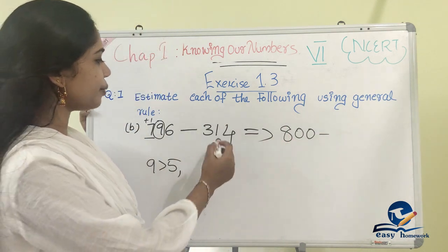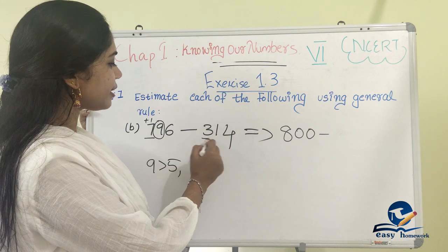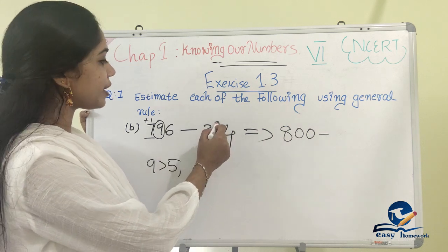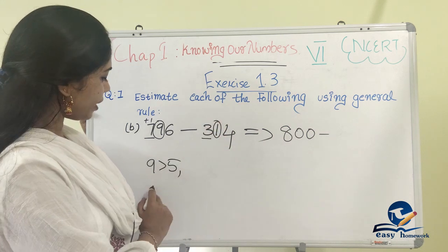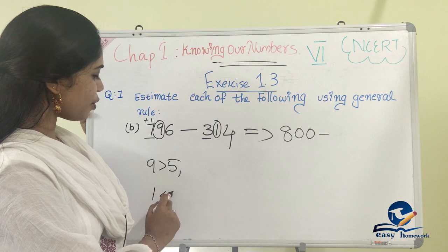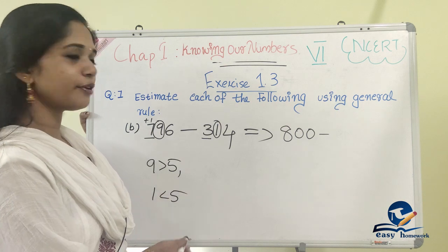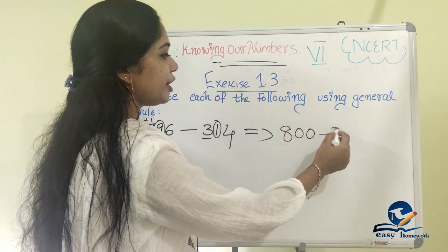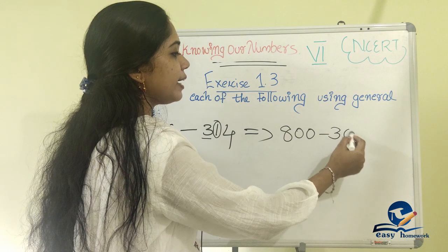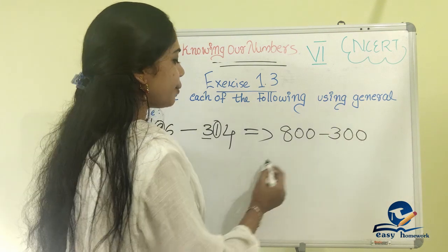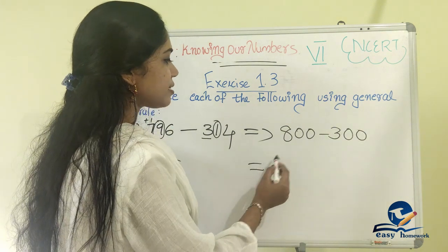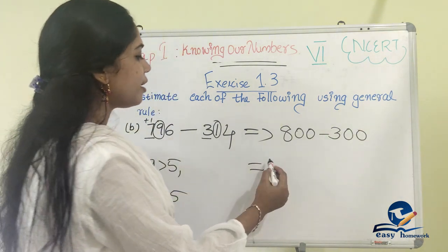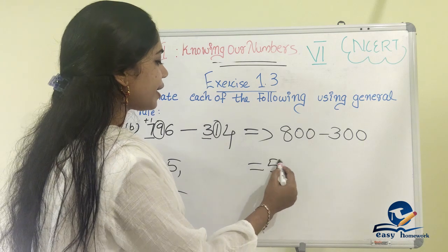Now for 314, in the 100 position is 3, and in the tens position is 1. Since 1 is less than 5, we keep 3 as is. So 314 rounds to 300. The estimated answer is 800 minus 300, which equals 500.